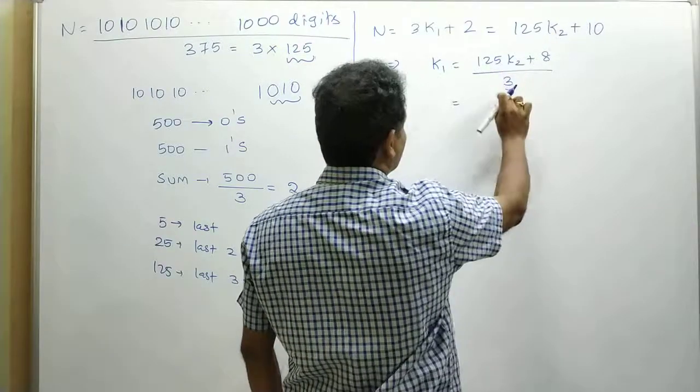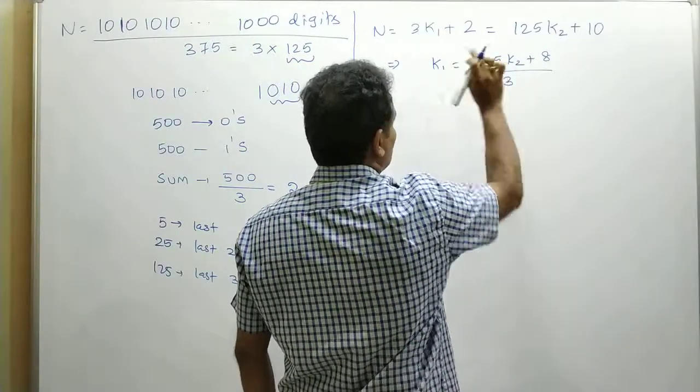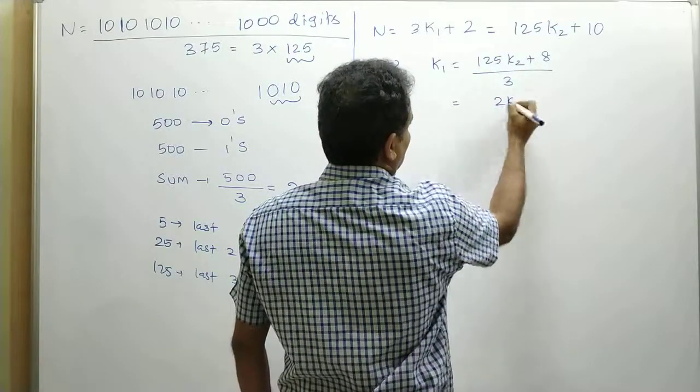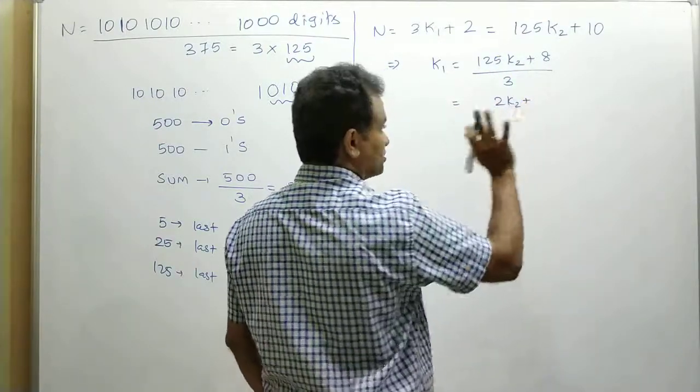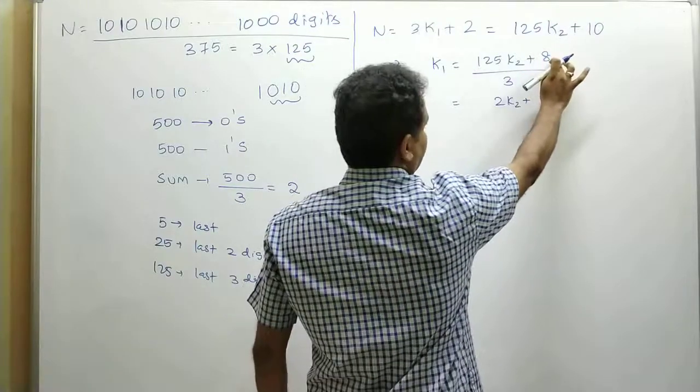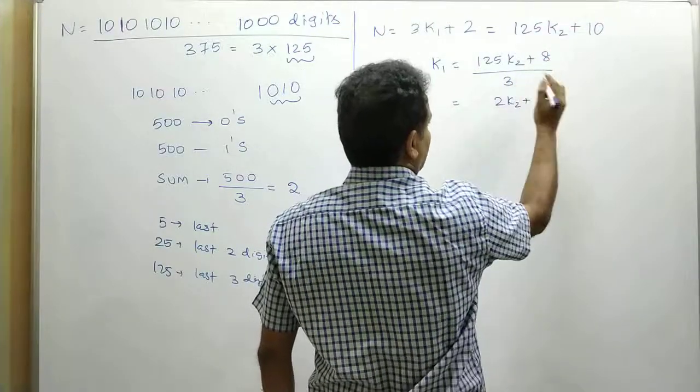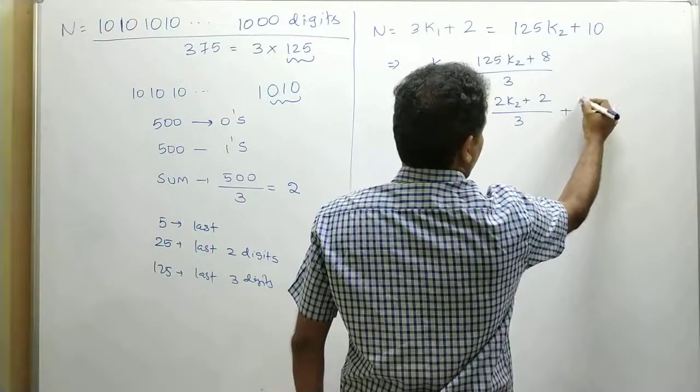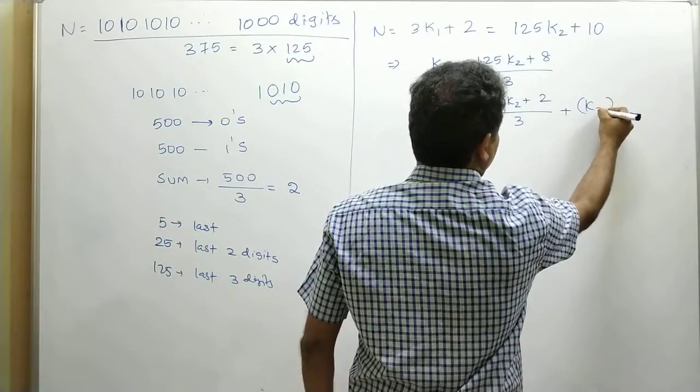So when 125 is divided by 3, 3 goes 4 times in 12, in 5 it goes 1 time. Therefore, 2k₂ is the remainder. The quotient part I am not focusing. Again, when you divide 8 by 3, which goes 2 times, 2 is the remainder, plus some fraction part must be there. I am not focusing.